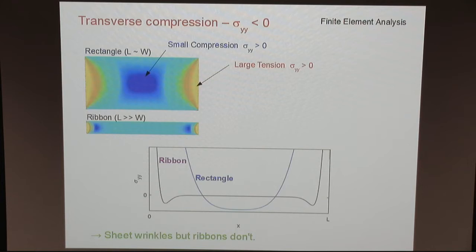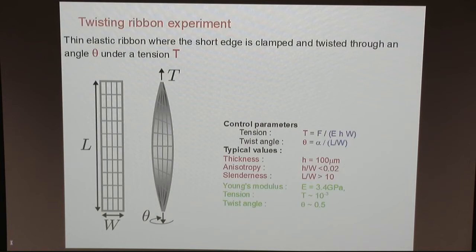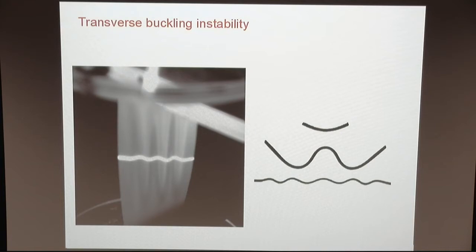To go further, we do the experiment. You take a ribbon with a given geometry, under tension, and apply a twist. It's a macroscopic experiment. The geometry I'm using is a simple elastic sheet — mylar. We can shine a laser sheet and detect the out-of-plane deformation. If the ribbon is long and thick, we have the fundamental mode. If we make it thinner, then we can have a smaller wrinkle.